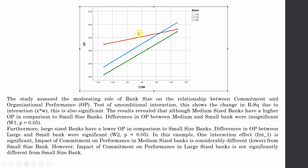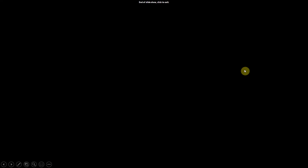Based on these results, the R-square change was significant with the inclusion of the moderating variable. We can say that bank size does moderate the relationship between commitment and organizational performance. Thank you very much.